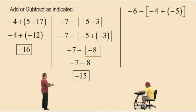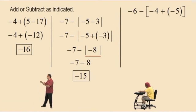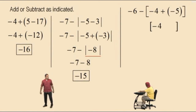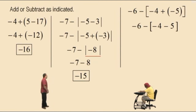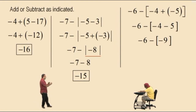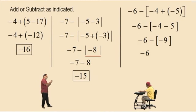Negative 6 subtract the quantity negative 4 plus a negative 5. Some of you see negative 4 plus a negative 5 is negative 9. Or you may see negative 4 plus a negative 5 is the same as negative 4 subtract 5 — either way you get negative 9. Don't forget to always bring down your work. Notice here we are subtracting a negative 9.